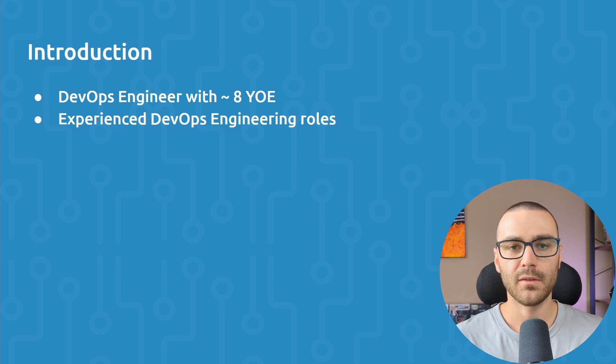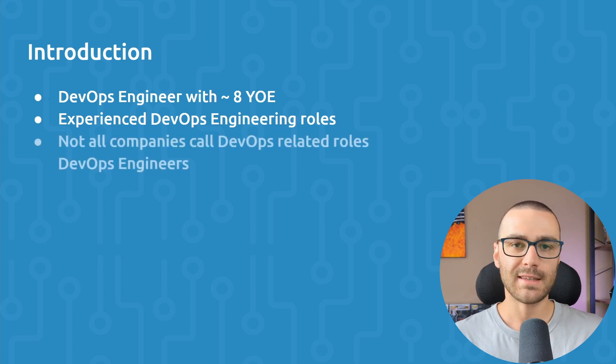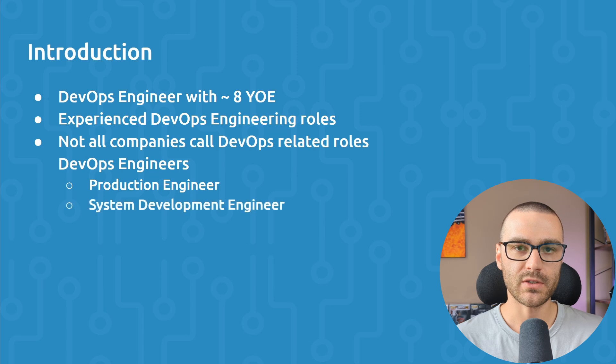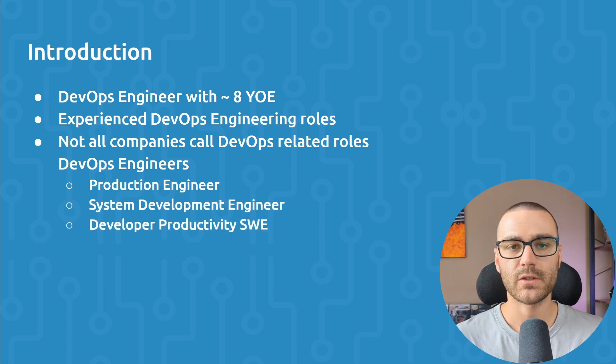I'd like to point out that typically the title of a DevOps engineering role is called a DevOps engineer, but that isn't the case for all companies, especially larger companies like Meta, Amazon, and Google. For example, at Meta, the role that does a lot of DevOps activities is called a production engineer. At Google, they're referred to as developer productivity software engineers, and at Amazon Web Services, they're referred to as system development engineers.